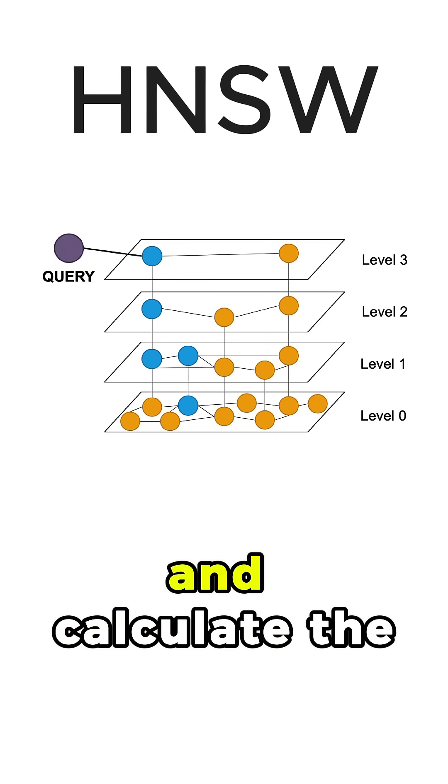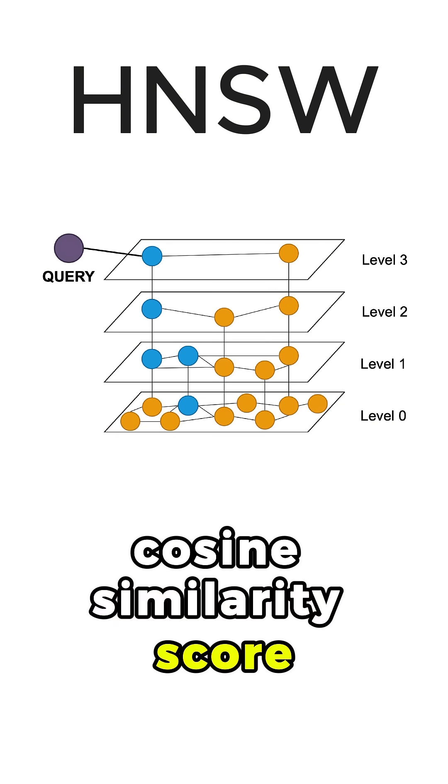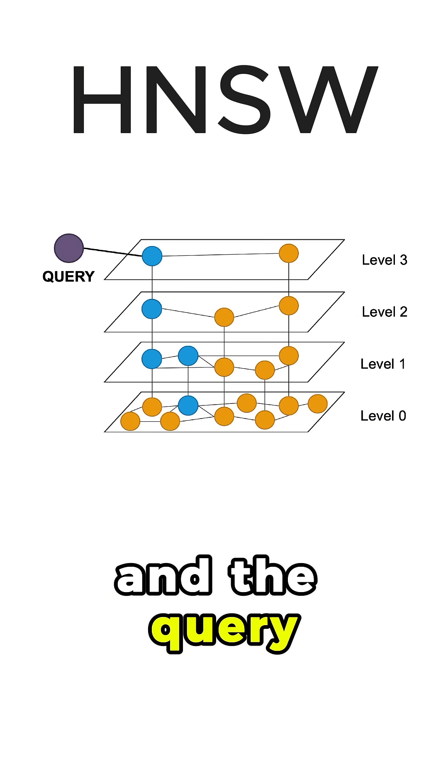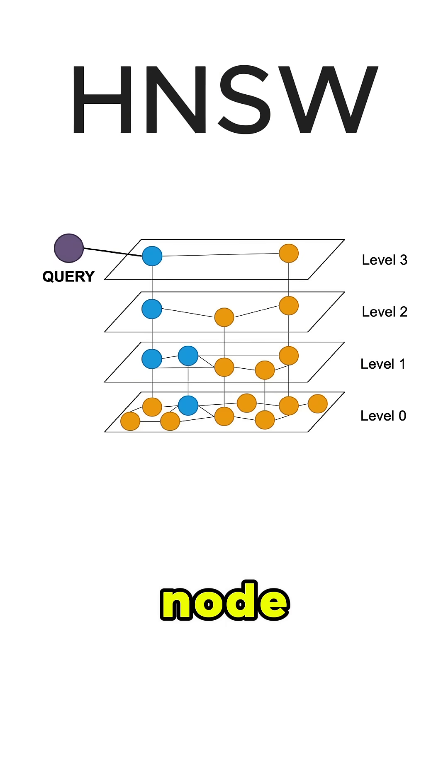We do this test again and calculate the cosine similarity score of this node and the query and also of all its neighbors with the query, and we see that this neighboring node has the best similarity, so we go there.